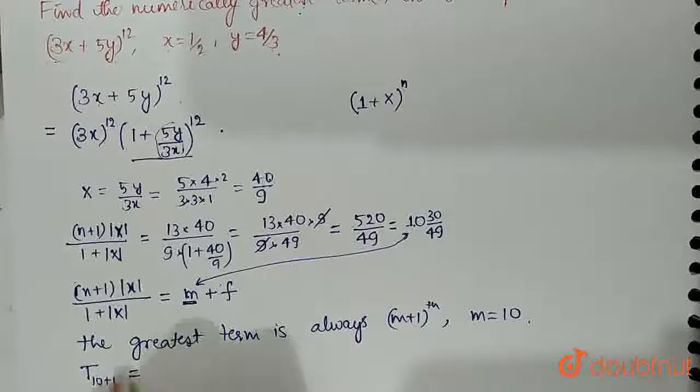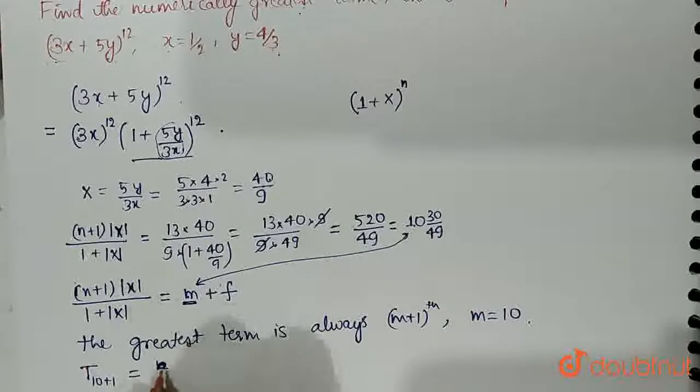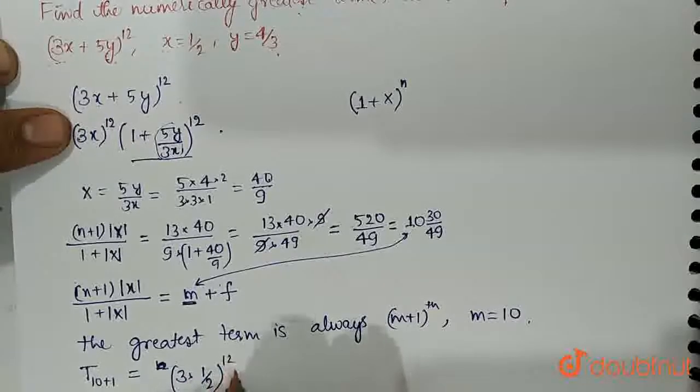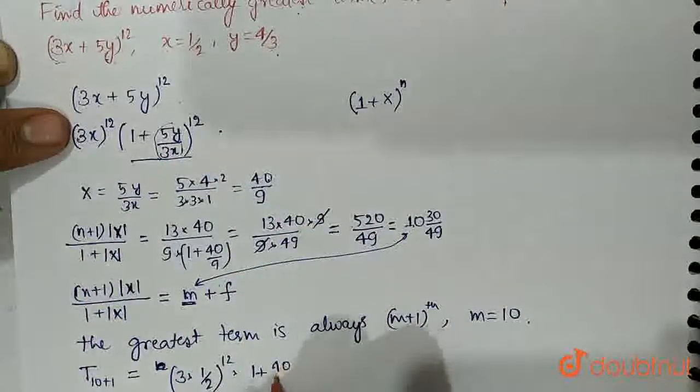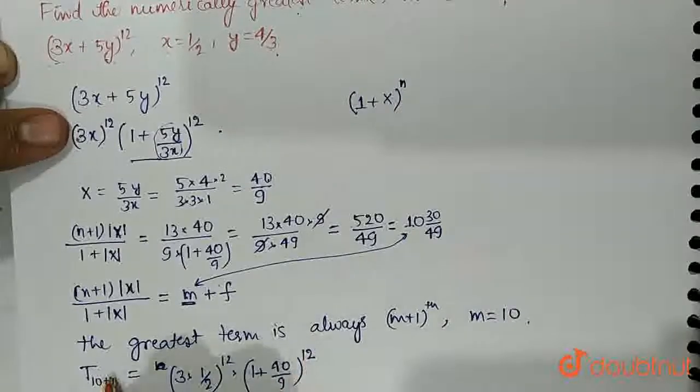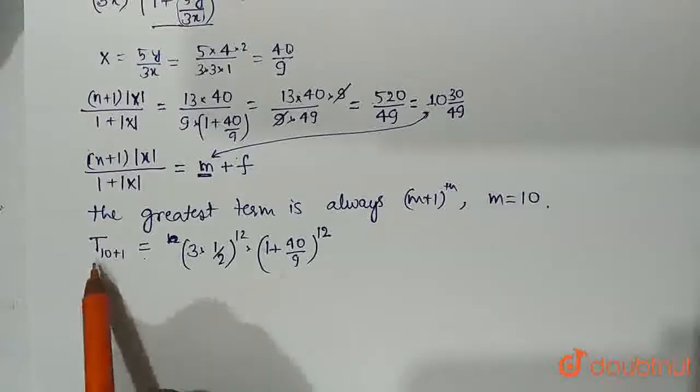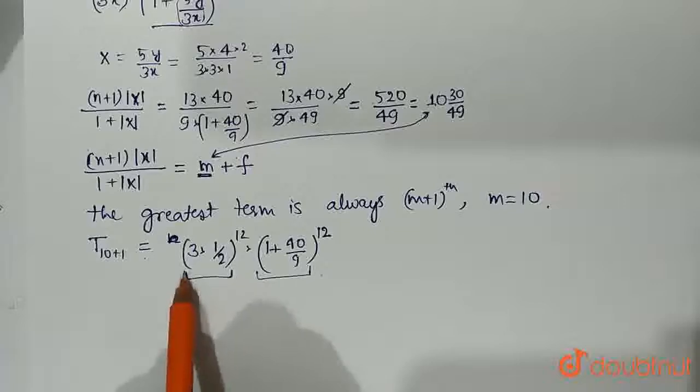So T11 or T(10 plus 1) is (3x)^12, x which is half raised to the power 12, into 1 plus this whole thing 40 upon 9 raised to the power 12. So we have to find the 11th term for this expression.